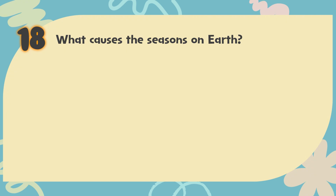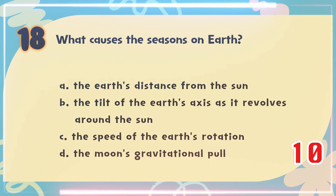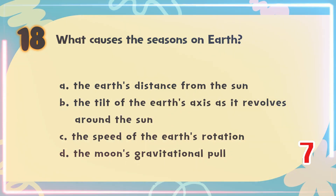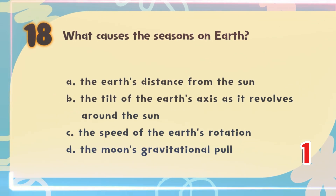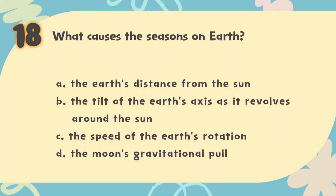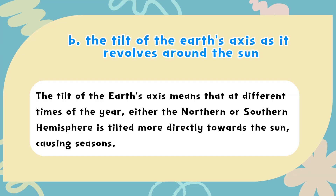Number 18. What causes the seasons on Earth? The choices are: A. The Earth's distance from the sun; B. The tilt of the Earth's axis as it revolves around the sun; C. The speed of the Earth's rotation; D. The moon's gravitational pull. The correct answer is B. The tilt of the Earth's axis as it revolves around the sun. The tilt means that at different times of the year, either the Northern or Southern Hemisphere is tilted more directly towards the sun, producing the seasons.